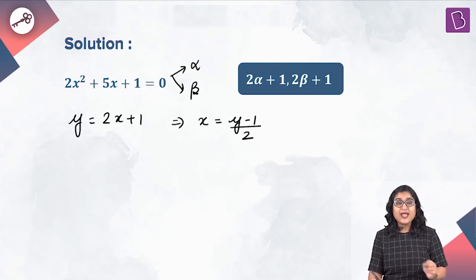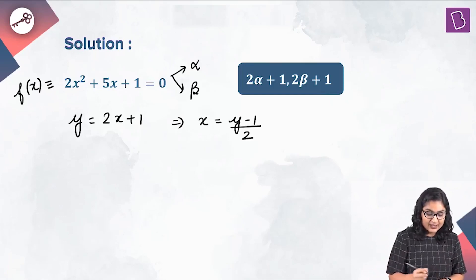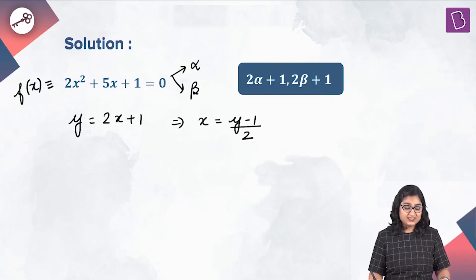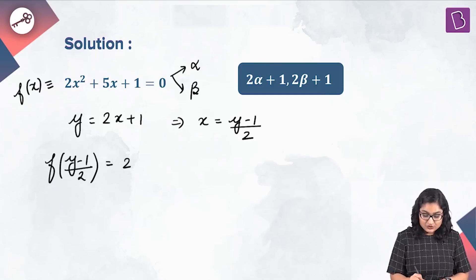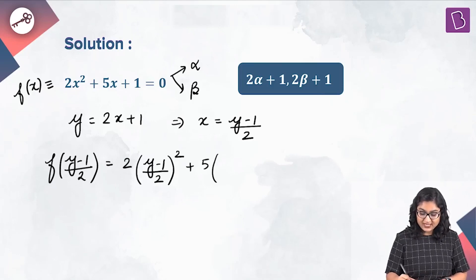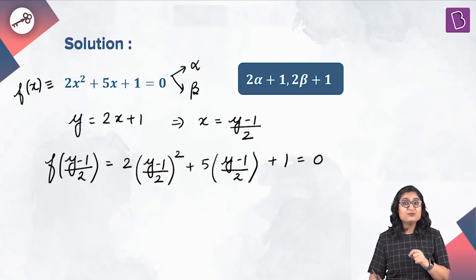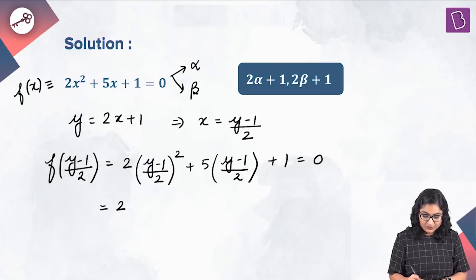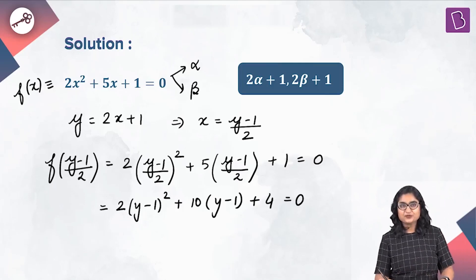We are going to put x equal to y minus 1 divided by 2 in f of x, defined by 2x squared plus 5x plus 1. So f of (y minus 1) divided by 2 equals 2 multiplied by (y minus 1) divided by 2 whole squared plus 5 times (y minus 1) divided by 2 plus 1 equal to 0. Taking LCM of 4, we get 2 times (y minus 1) whole squared plus 10 times (y minus 1) plus 4 equal to 0.